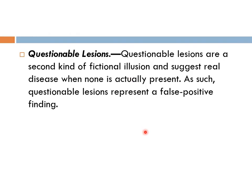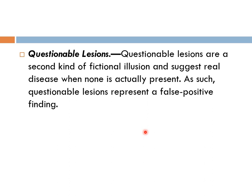Questionable lesions are another type of fictional illusion — they suggest real disease but it is actually not present, mostly leading to false positive findings. For example, in the proximal humerus there appears to be a lytic lesion, but when CT and MRI are done there is nothing — it is commonly mistaken. In another example, B, there appears to be an aneurysm in the basilar artery, but when repeated there is nothing — it was formed by a motion artifact.